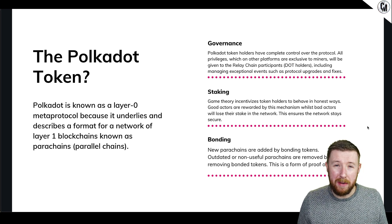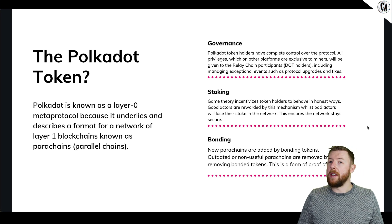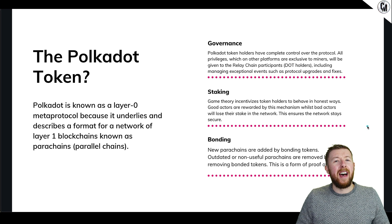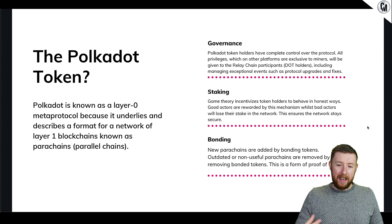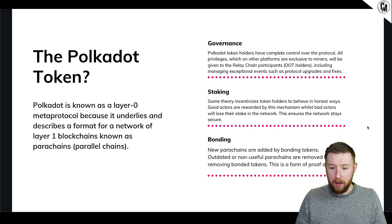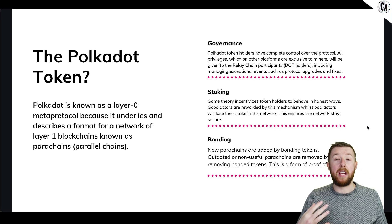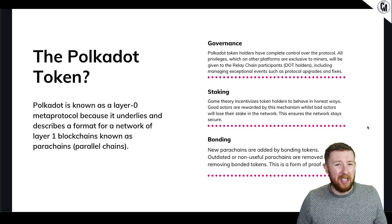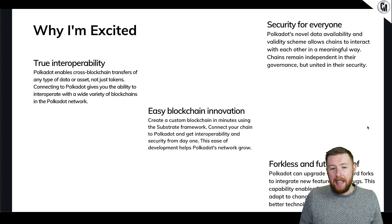The next thing is staking. You can get roughly 15% at the moment on the network protocol, and it is a great system that works very well. There's a 28-day bonding period, which is kind of good and bad for network security. However it is passive income - if you've got a bag you want to keep on the chain, just stake it. The last one is bonding new parachains - bonding tokens out, and non-useful parachains will be removed from the bonded tokens.